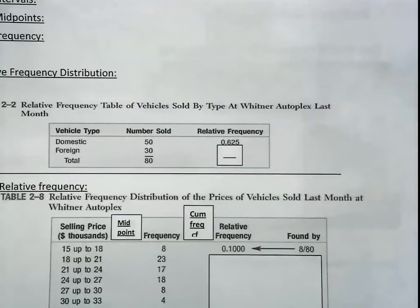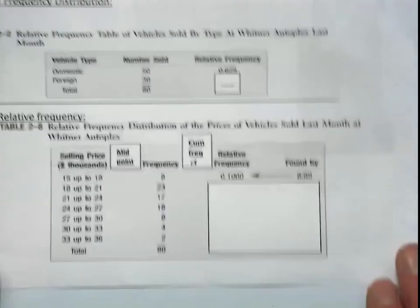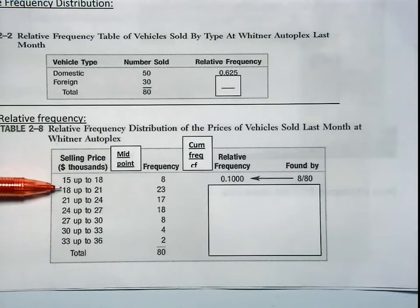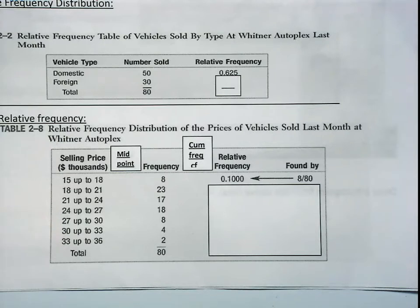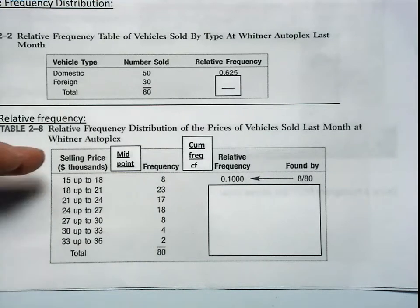What I'd like to concentrate on is some calculations. This is a frequency distribution you can see right here, which is on your handout. There are 7 classes in this data. The interval is 18 minus 15, or 3 — in this case we're talking thousands of dollars, so it's $3,000. Each interval must be the same. I'd like to go over how we got here.